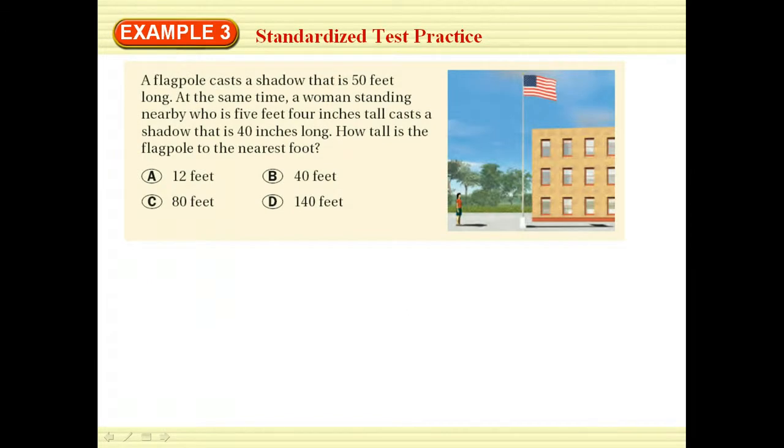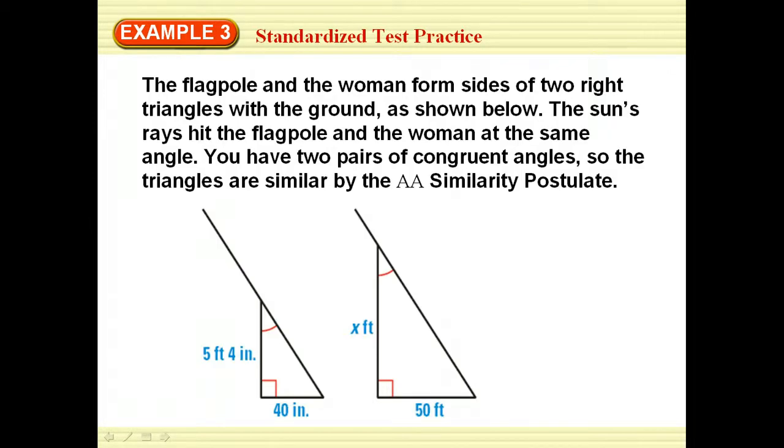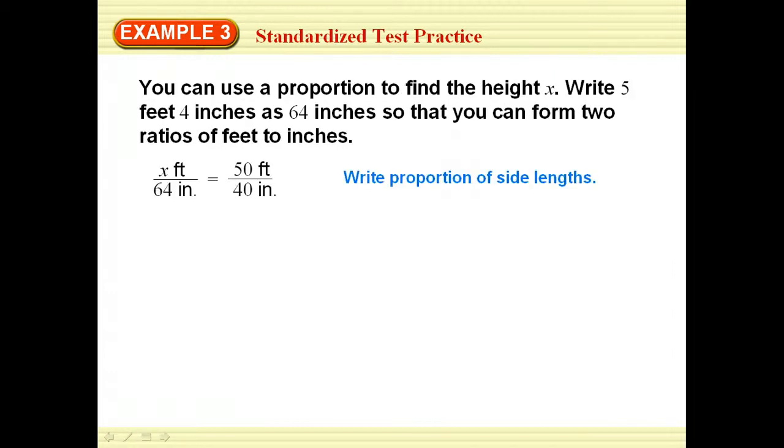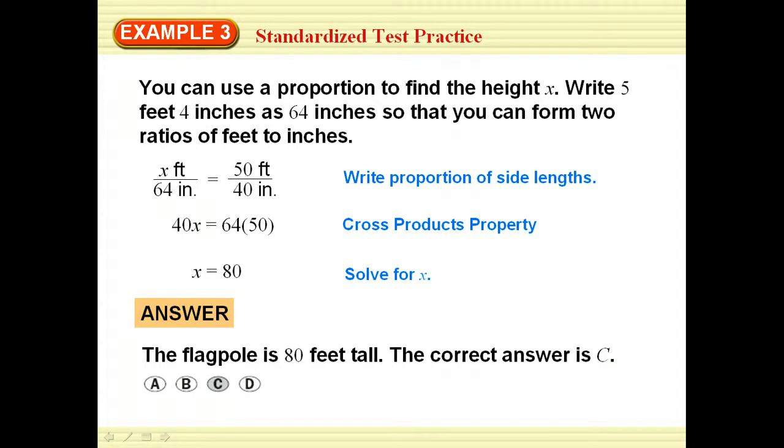Standardized test. I have a flagpole that casts a shadow that's 50 feet long, and I've got a woman that's 5 foot 4 that casts a shadow of 40 inches. So this shadow is 40 inches and this shadow is 50 feet. This woman is 5 foot 4 inches, and I need to know how tall the flagpole is. I'm going to use similar triangles. The flagpole and the woman are here. We know that the angle that the sun hits will be the same, and we know that these are right angles, so I've got angle-angle similarity. So I can set up a proportion. 5 foot 4 inches is actually 64 inches, so how many feet goes with 64 inches if 50 feet goes with 40 inches? I do my cross product and I can see that it is 80. So that flagpole is 80 feet tall.